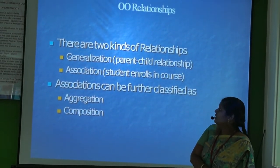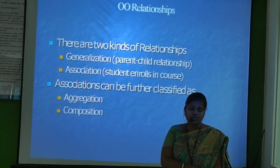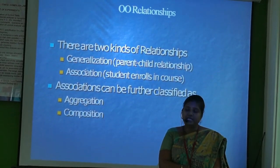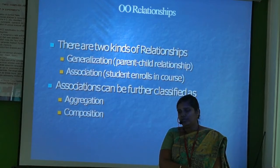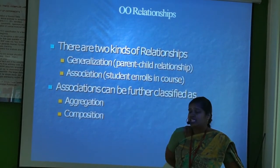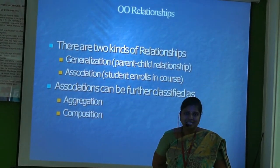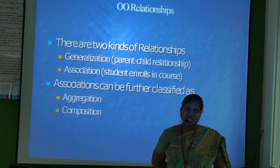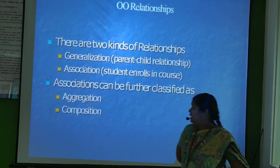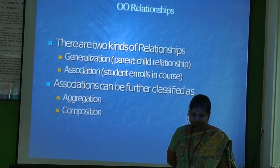There are two kinds of relationships: generalization and association. Apart from these, there are two more: aggregation and composition. Aggregation is the 'has-a' relationship. Composition is the stricter part of the association relationship.